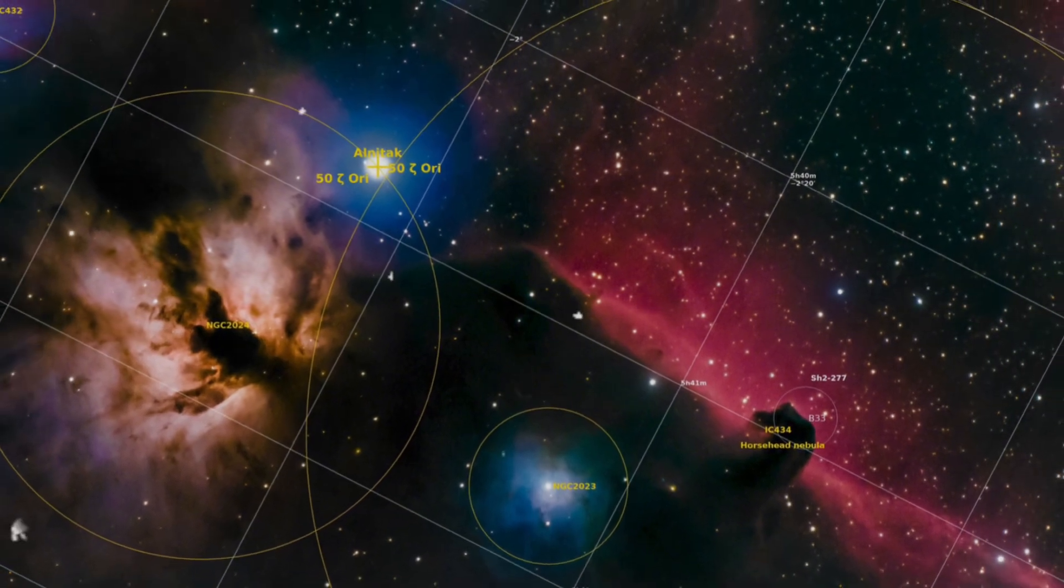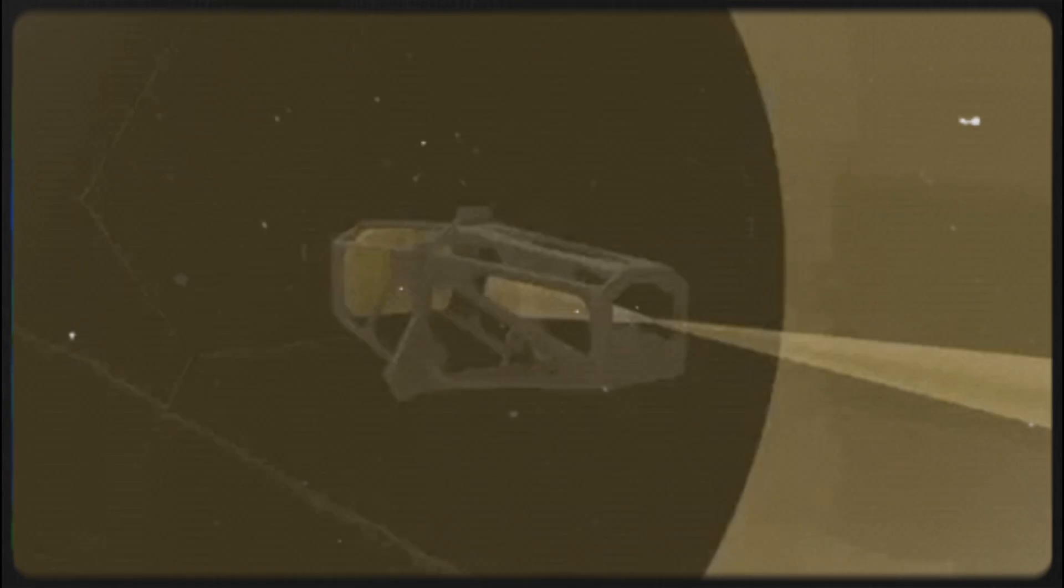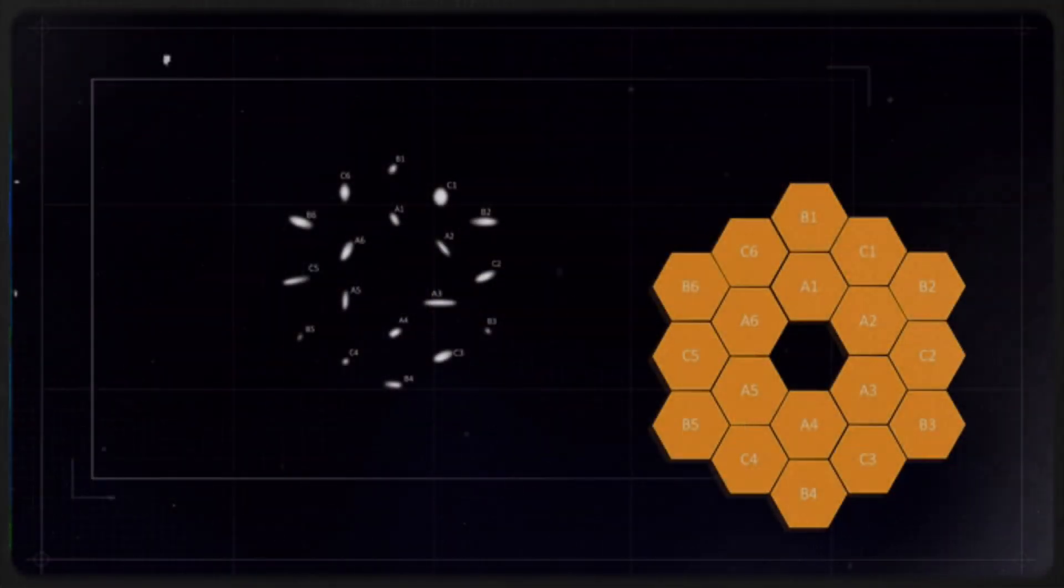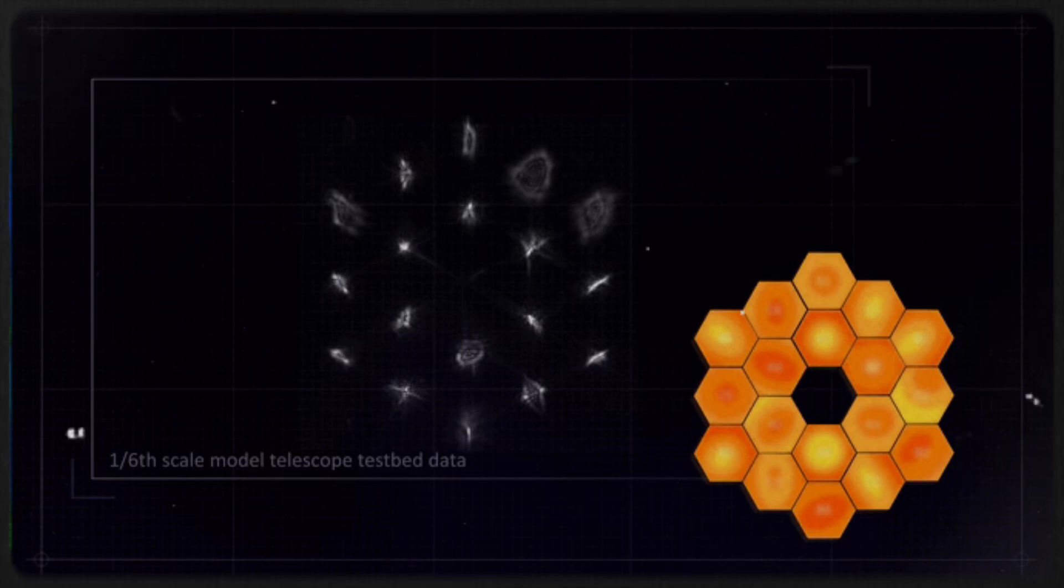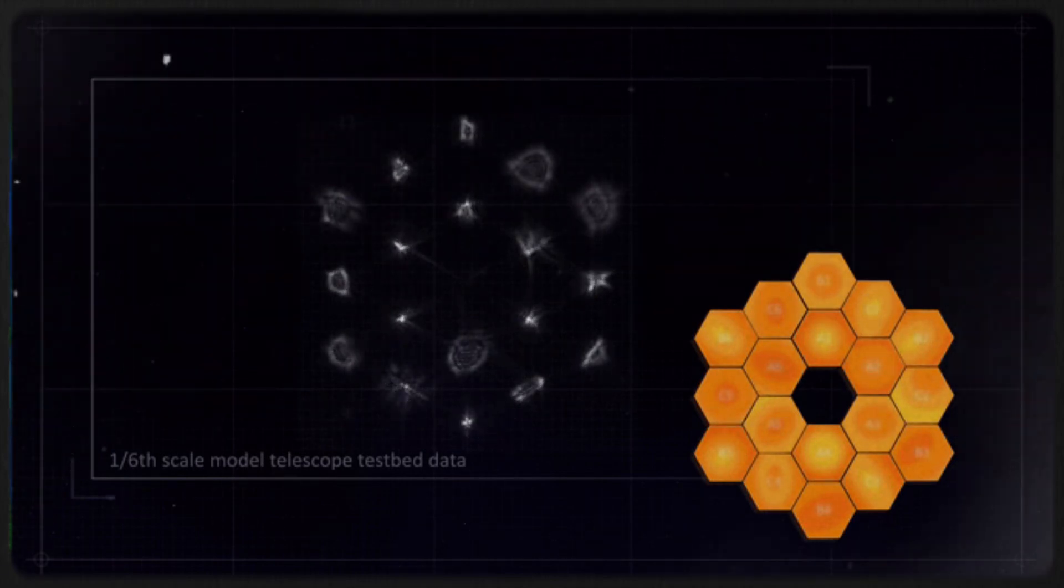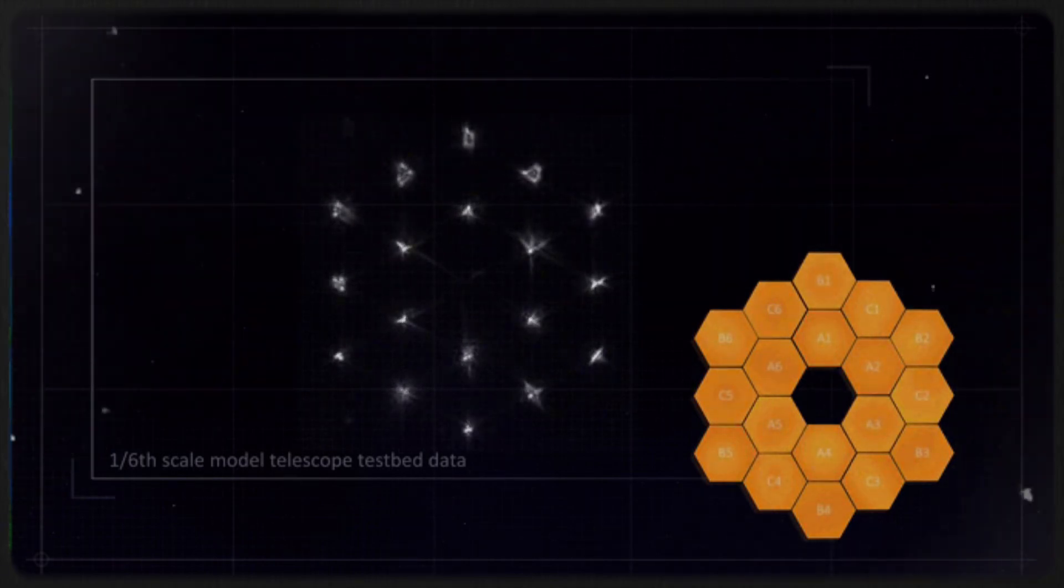That's where the James Webb Space Telescope comes in. Armed with next-generation infrared instruments, Webb is able to peer through the dust that hides these faint objects. It sees what Hubble couldn't: brown dwarfs as small as just a few times the mass of Jupiter, and possibly even smaller.